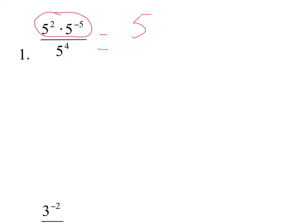And our rule for multiplying is we add exponents, so 2 plus a negative 5, different sign, subtract. Bigger sign, our bigger number gets the sign negative, so it's 5 to negative 3 on top.